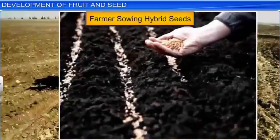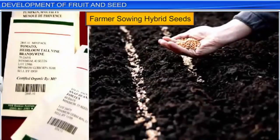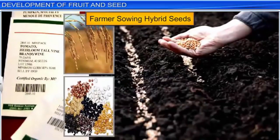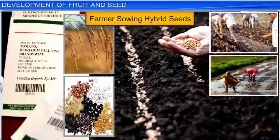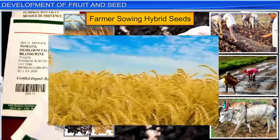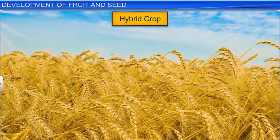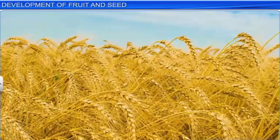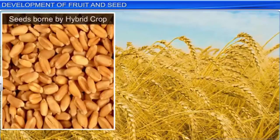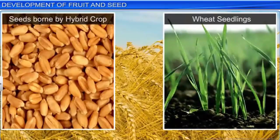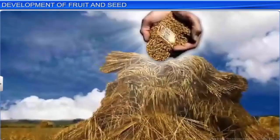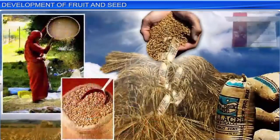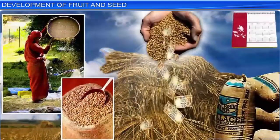Interestingly, farmers in recent times have started using hybrid seeds developed through artificial cross-pollination techniques. These seeds guarantee increased productivity and superior crop quality. However, when seeds born by hybrid crops are sown, the seedlings do not exhibit the hybrid characters due to the segregation of characters. This forces farmers to purchase new hybrid seeds year after year, which is an expensive affair.